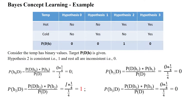Hi viewers, this video explains the base concept learning example. The given dataset has the variable temperature which has two different values: one is hot and another one is cold. For this data we have four hypotheses.